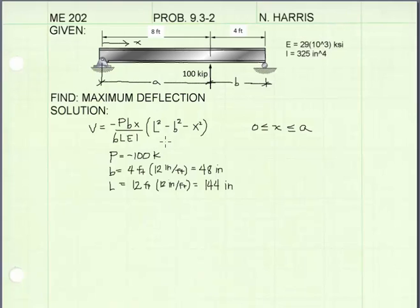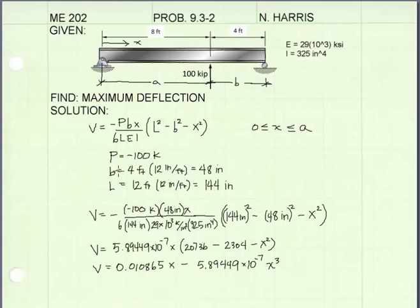We'll set it equal to 0 and solve for x. That'll tell us where the slope is 0. That will be where we have our local maximum, which will be our maximum deflection in the beam. I've gone ahead and plugged in my values for P, b, and L into the elastic curve equation. And I did this just to make the calculus a little bit easier.